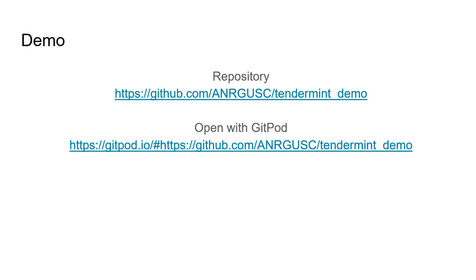In part two of this presentation, I'll go over a demo complete with a full node, a custom ABCI application, a client, and a small GUI that you can run on your system without installing anything. Just open the project in Gitpod by going to the URL shown. The link should also be available in the video description. I'll see you in the next video.